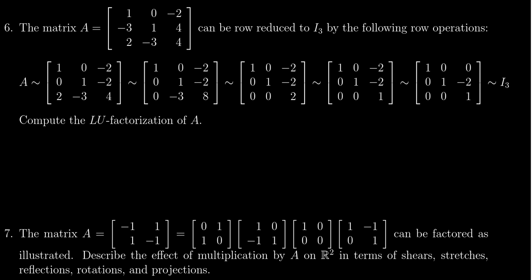And we're given the sequence of row operations that reduces A to the identity I3 in this situation. We're asked then to compute the LU factorization of A. So the LU factorization is going to be two matrices.